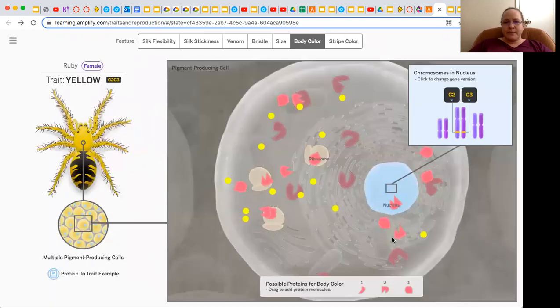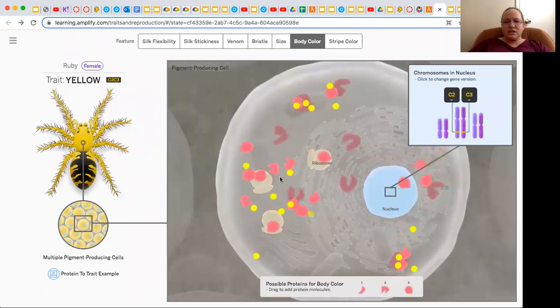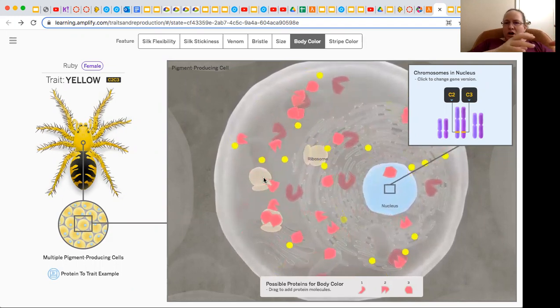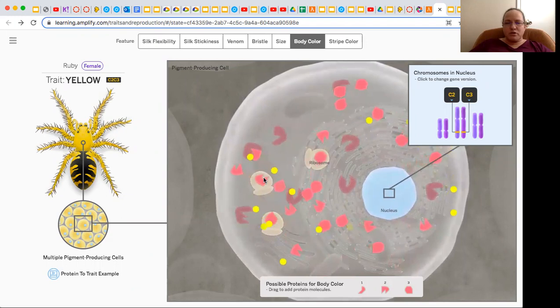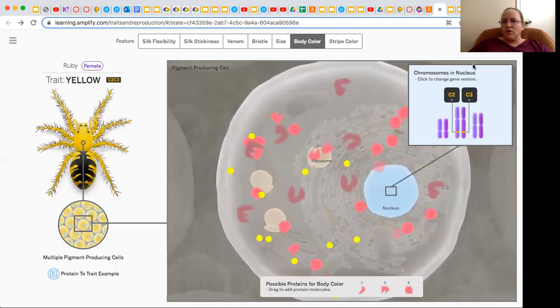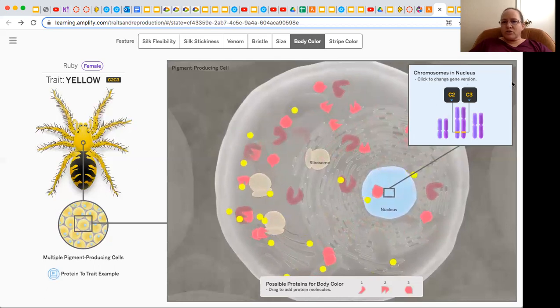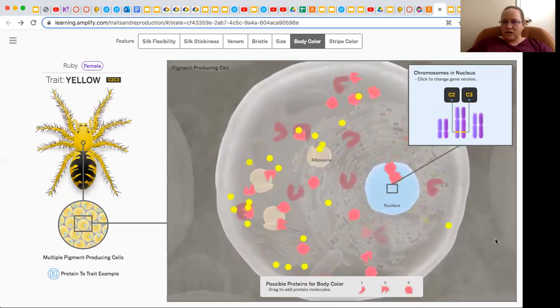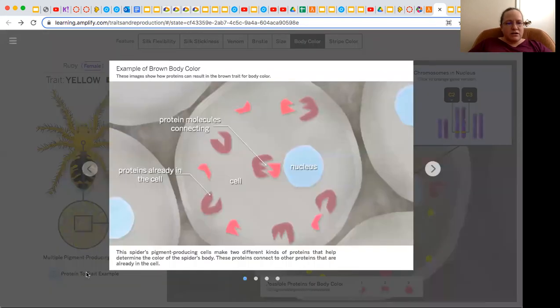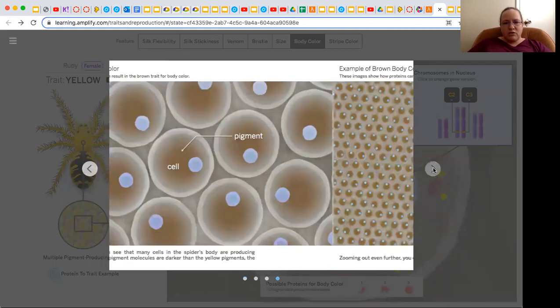So let's click on Ruby. When I click on her, I can see the proteins and how they're interacting within the cell. It gives me more information about how the proteins are showing the trait. Like how does that interact, the proteins and the trait that shows up in the person or the spider. So notice how over on here, I can see the chromosomes in the nucleus. And then I can also see the pigment within the cells. And if I click here, I can see more information about the protein and how that's showing up as the specific color, the yellow.